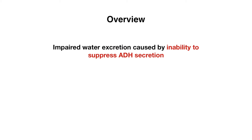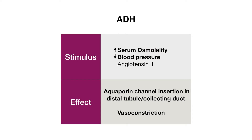SIADH occurs when there is impaired water excretion caused by an inability to suppress ADH secretion. To understand this a little bit more, we first need to understand how ADH works. ADH, or antidiuretic hormone, is secreted in response to an increased serum osmolality as well as decreased blood pressure. Those are the major stimuli that will cause ADH secretion.